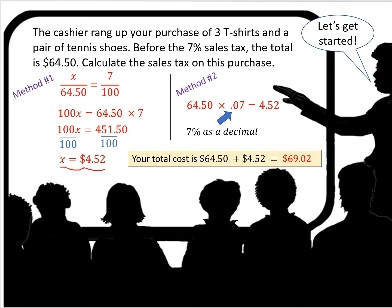In method two, you take the subtotal cost of $64.50, multiply times the decimal version of 7%, and you still get the same result: $4.52. So your total cost is the subtotal $64.50 plus the sales tax of $4.52, for a grand total of $69.02.